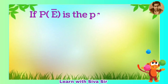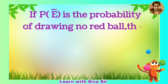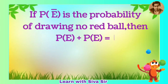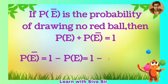If P of E dash is the probability of drawing no red ball, then P of E plus P of E dash equals 1. Therefore, P of E dash equals 1 minus P of E equals 1 minus 3 by 8 equals 5 by 8.